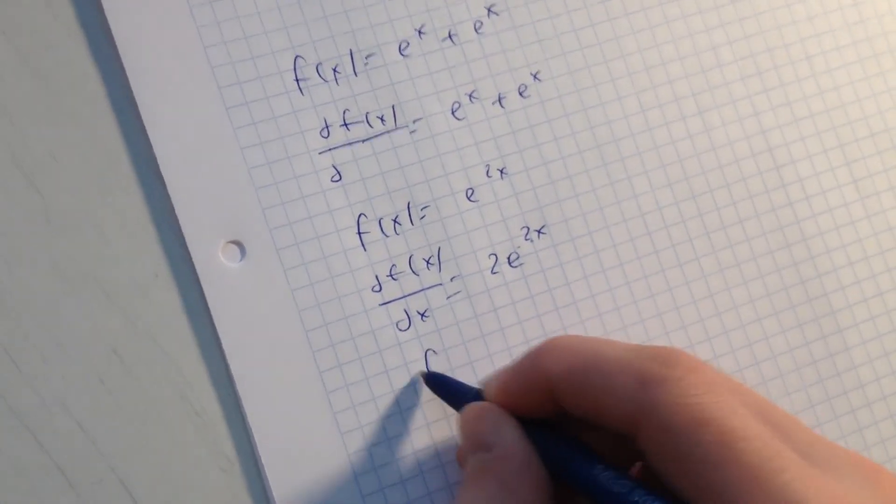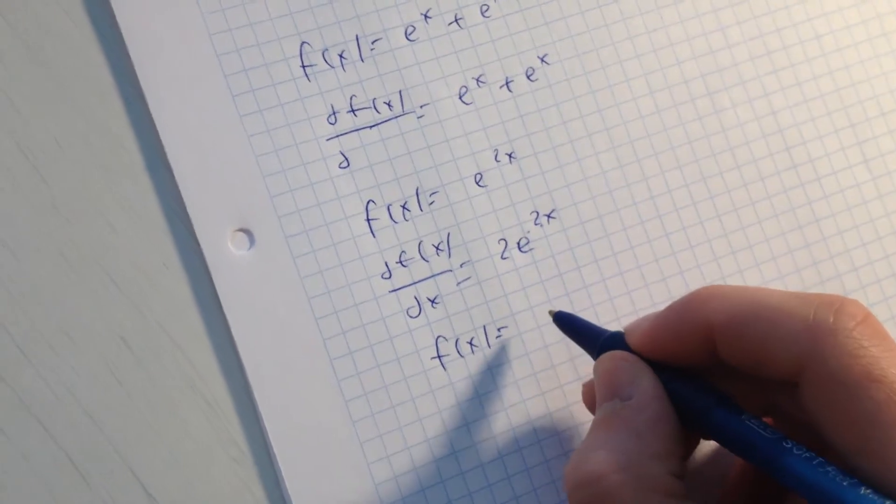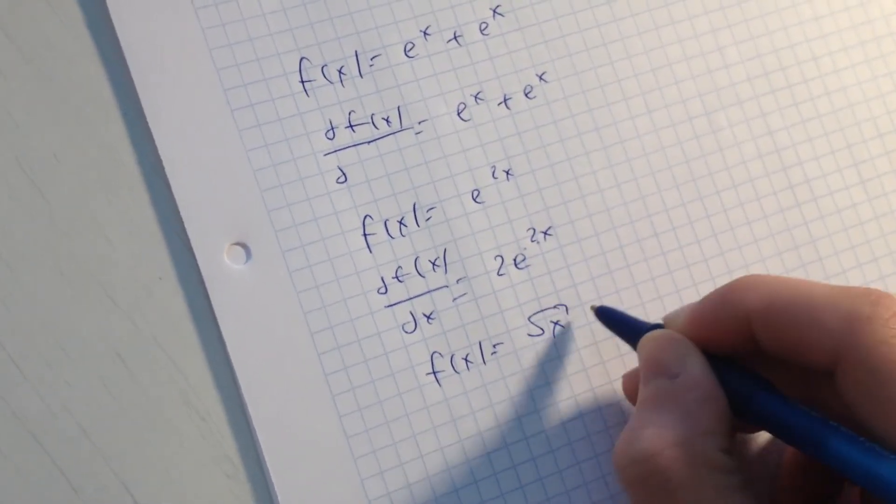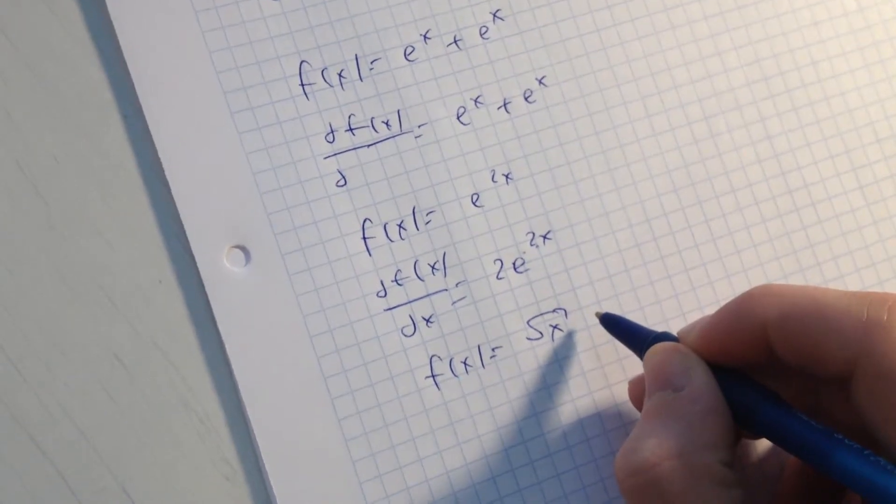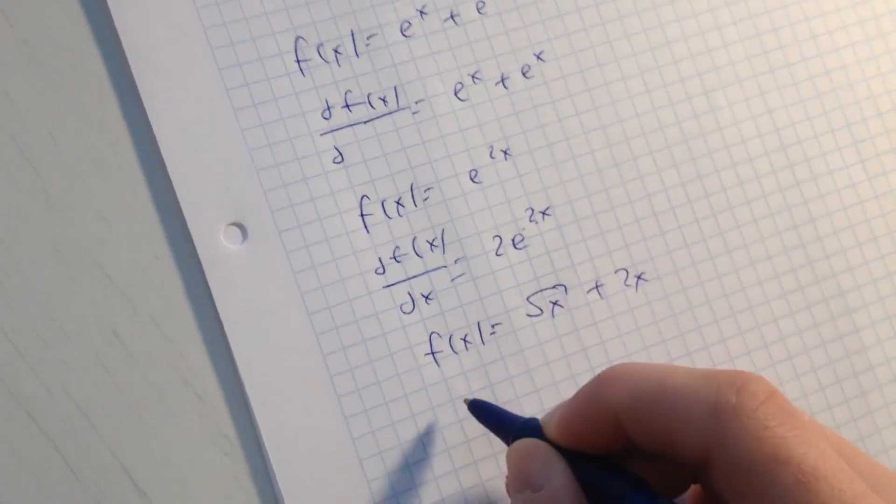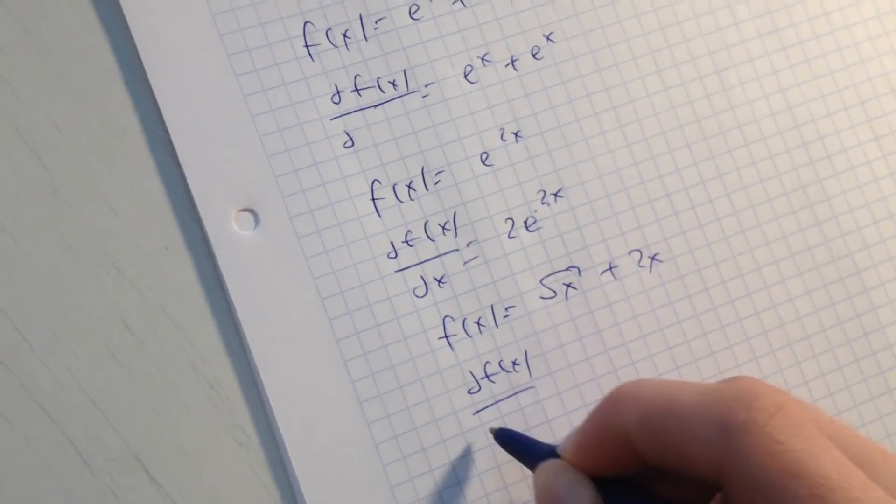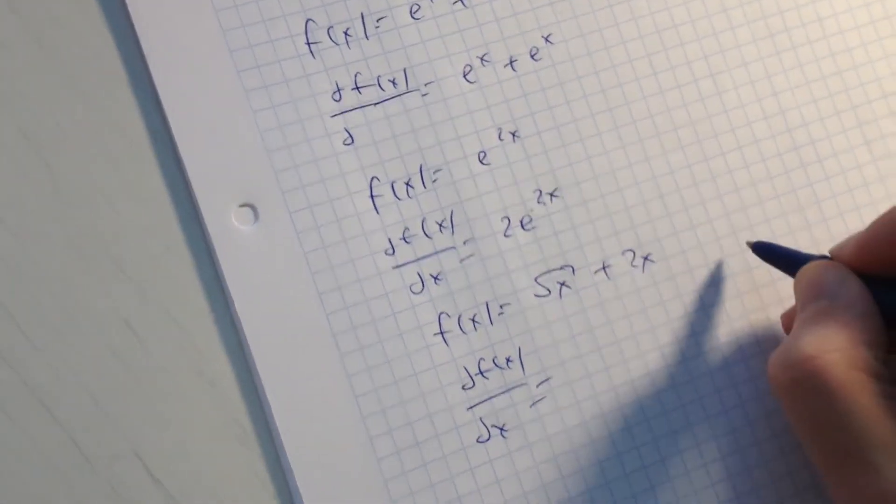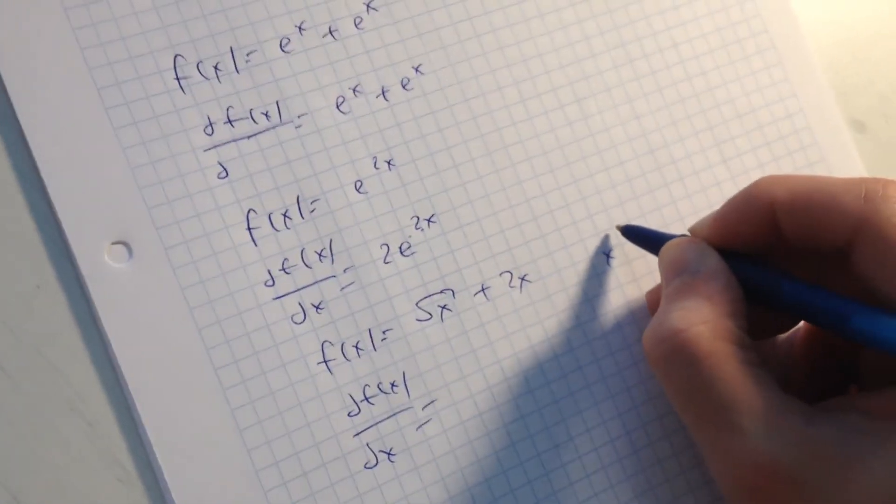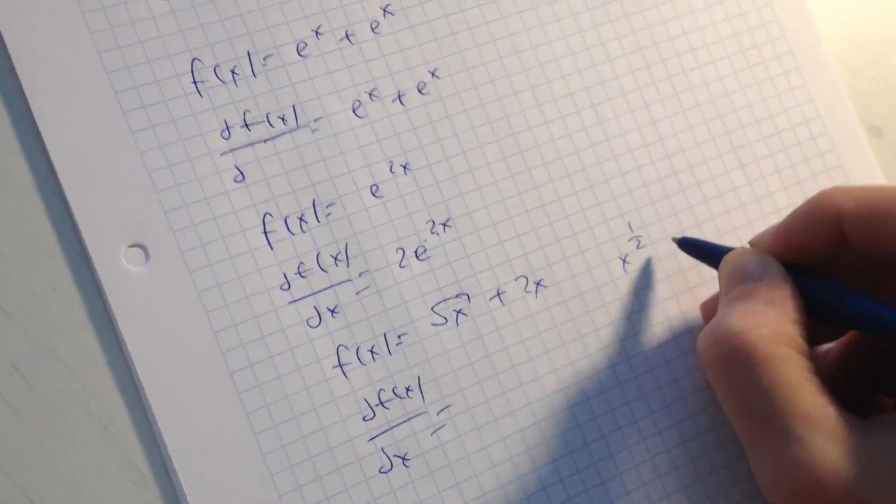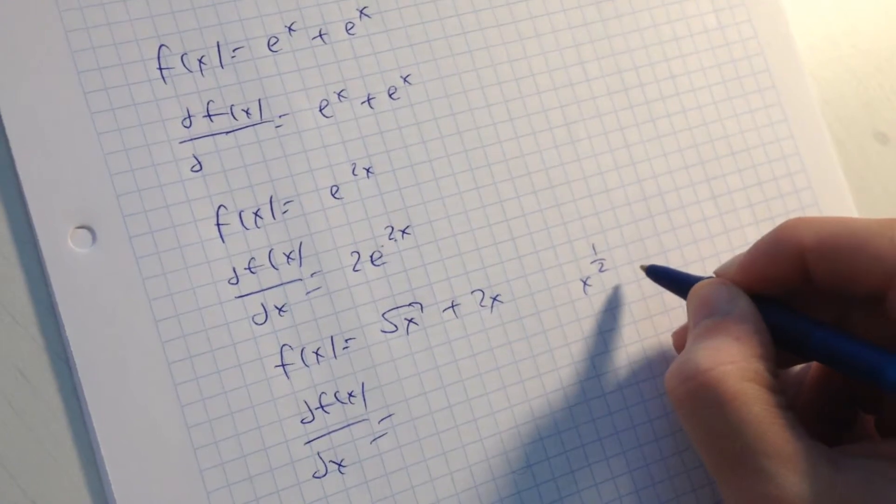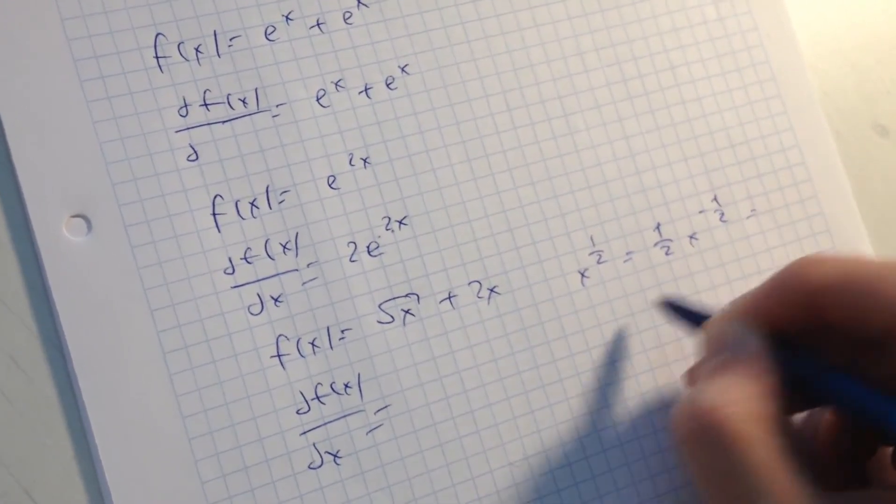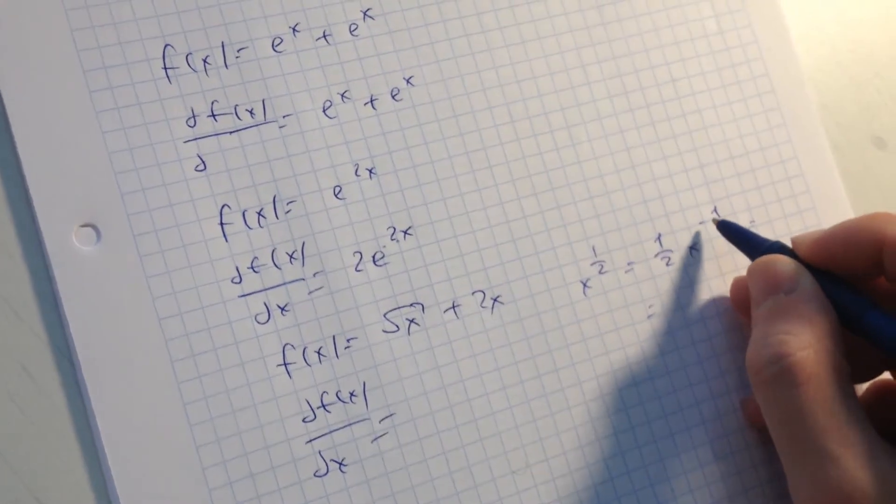f(x) is going to be square root of x plus 2x. And if we derive this function, the square root is going to be x to the 1/2, and x to the 1/2 is going to be 1/2 x to the minus 1/2, and x minus